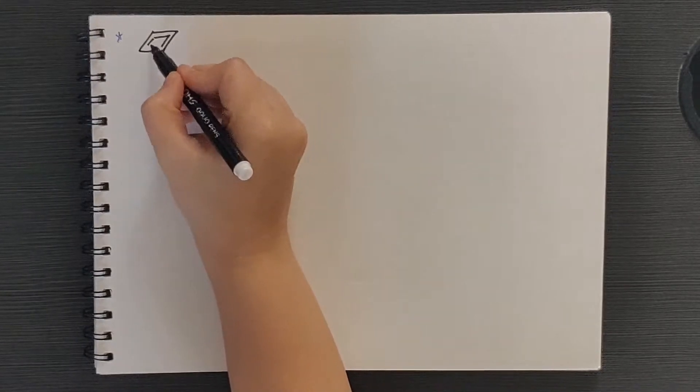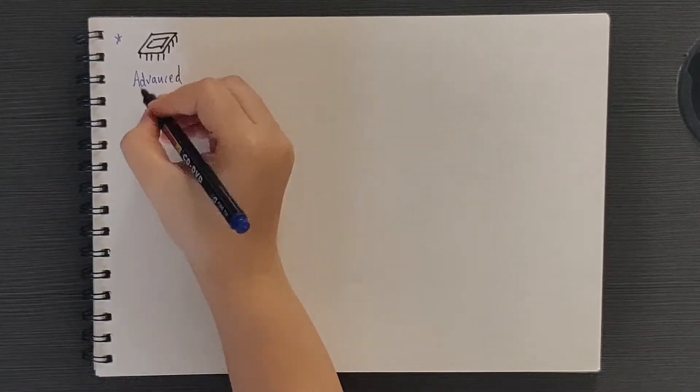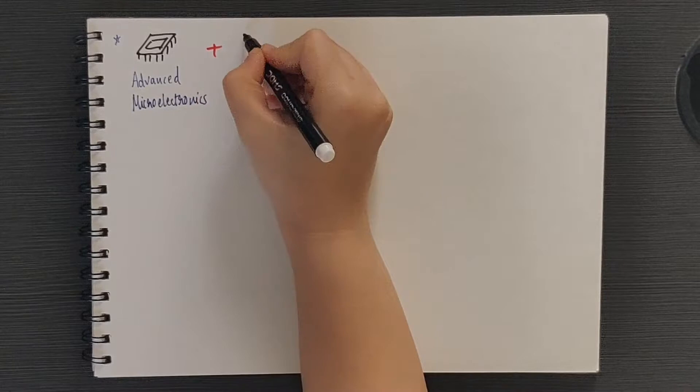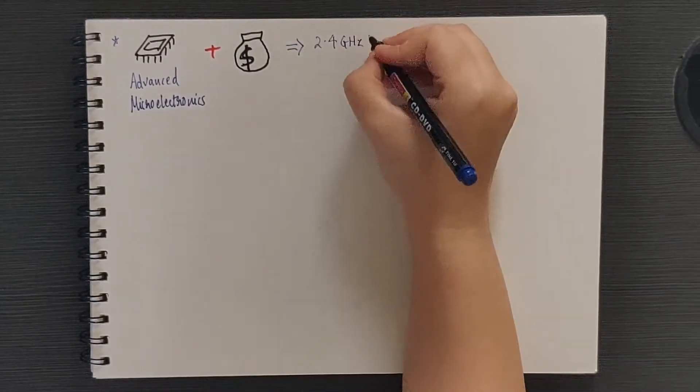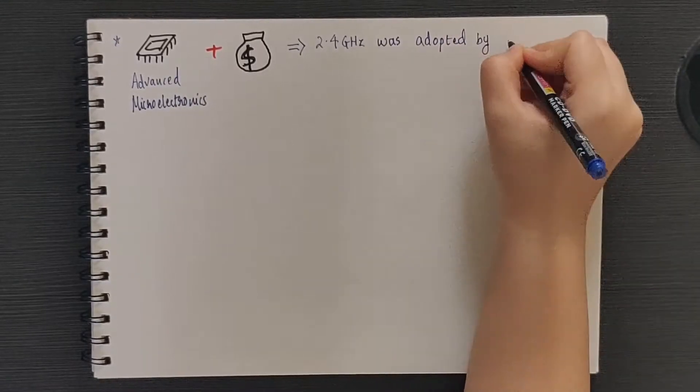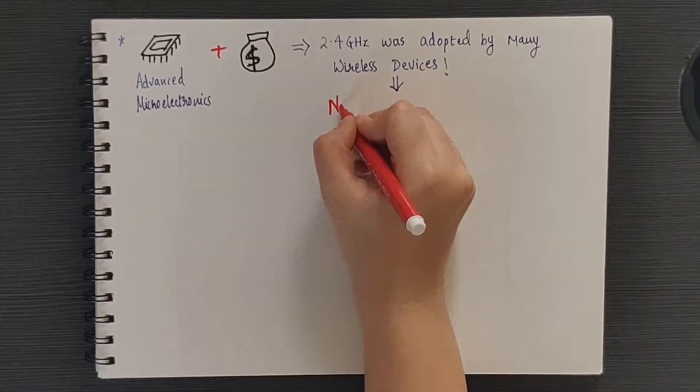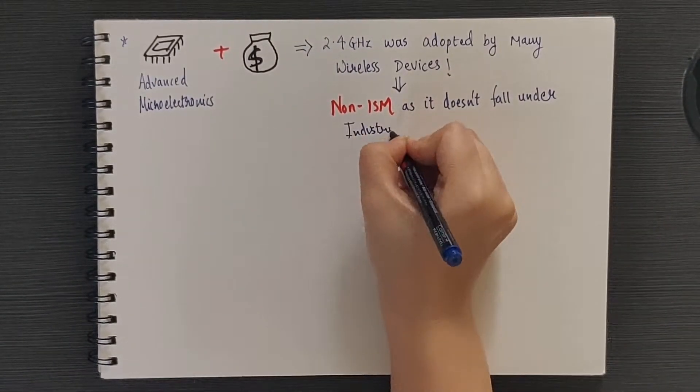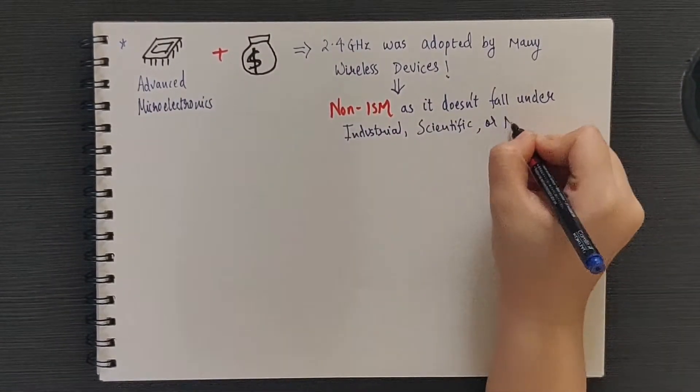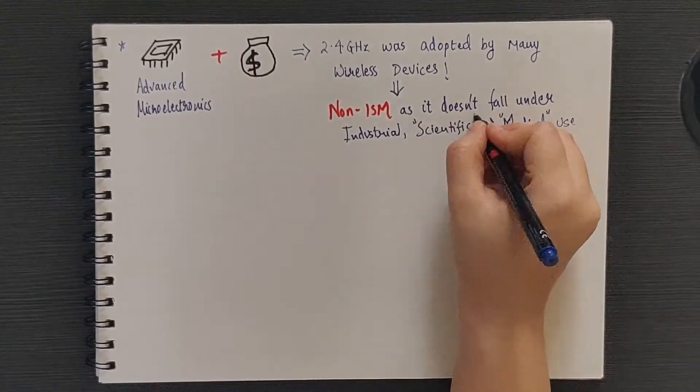Now due to increasing sophistication of microelectronics and the obvious economic attraction of unlicensed use, the 2.4 gigahertz ISM band was adopted by a large number of wireless devices. This is a non-ISM use of the band as it doesn't fall under the originally envisioned industrial, scientific and medical application areas.